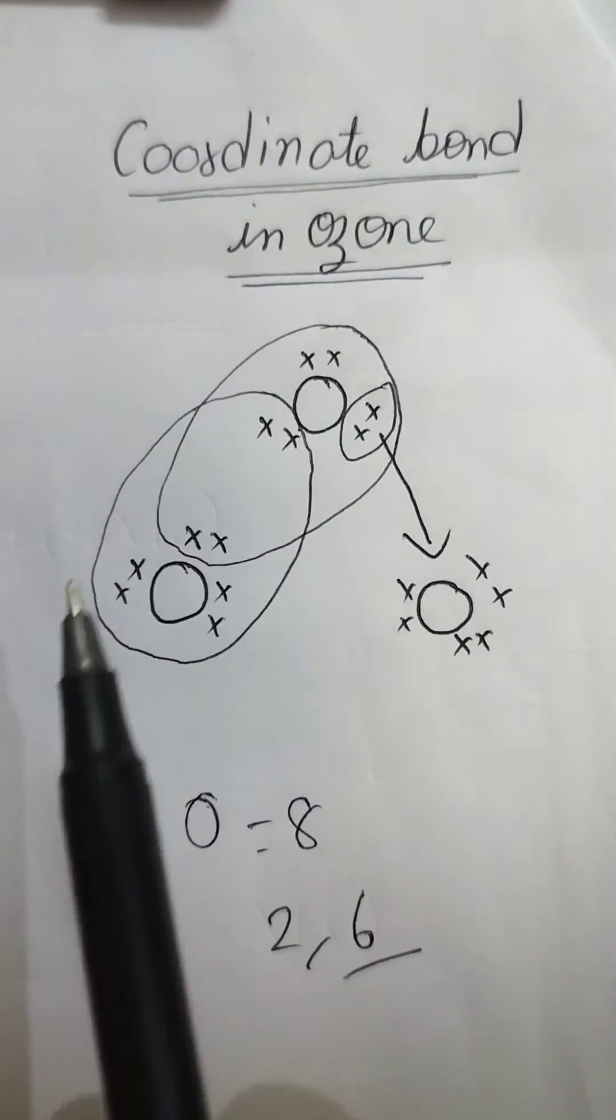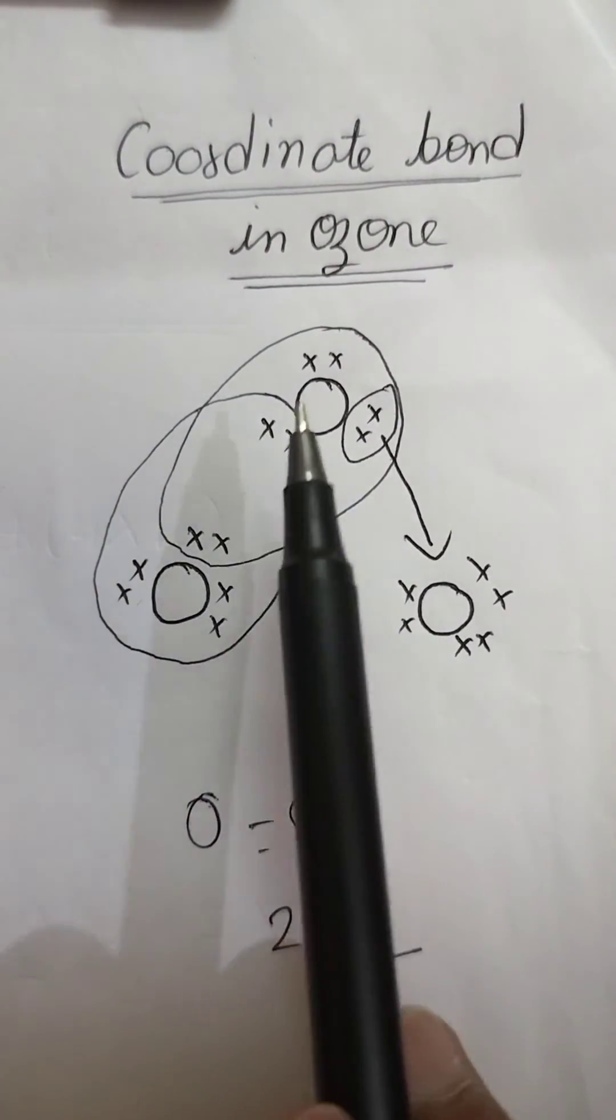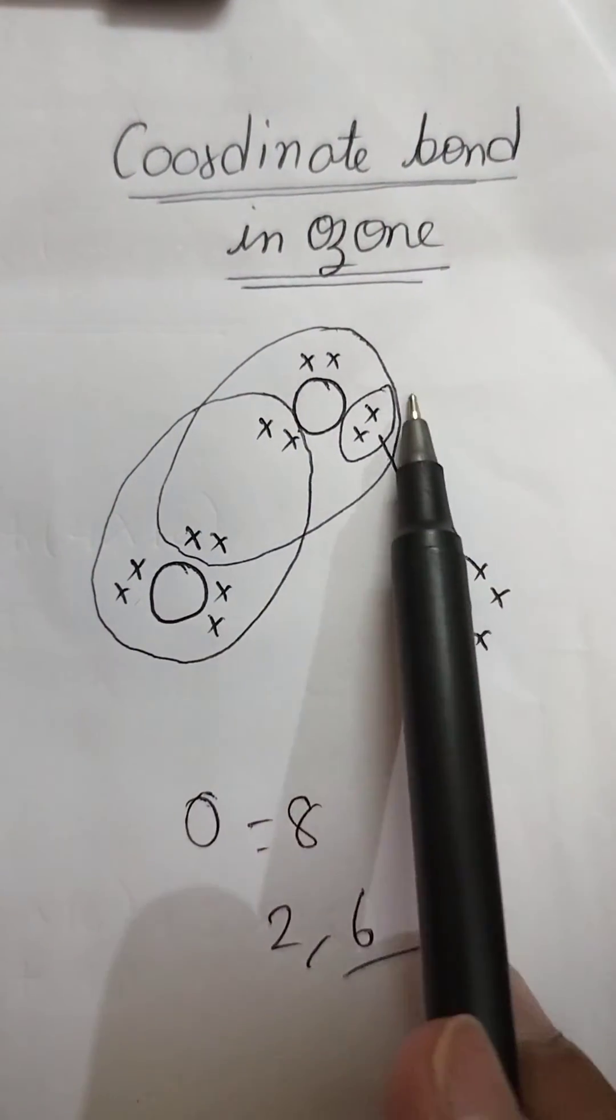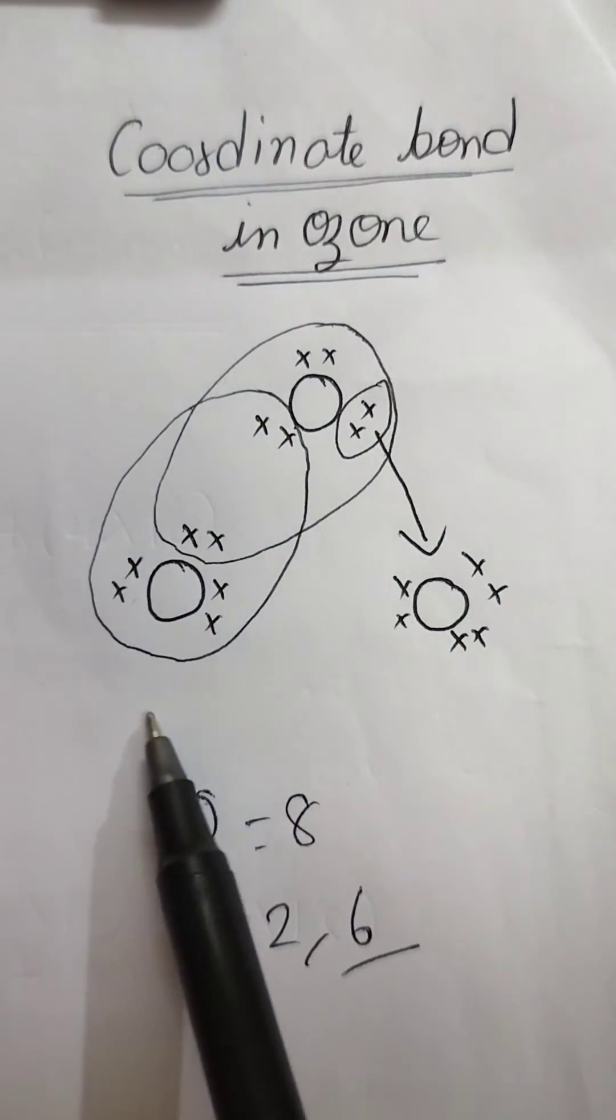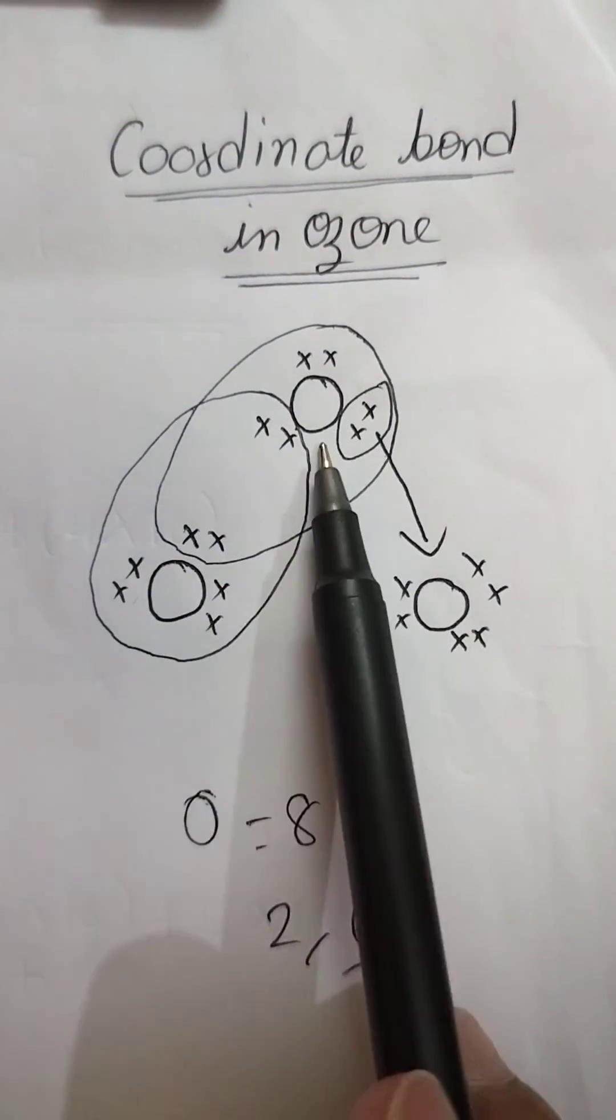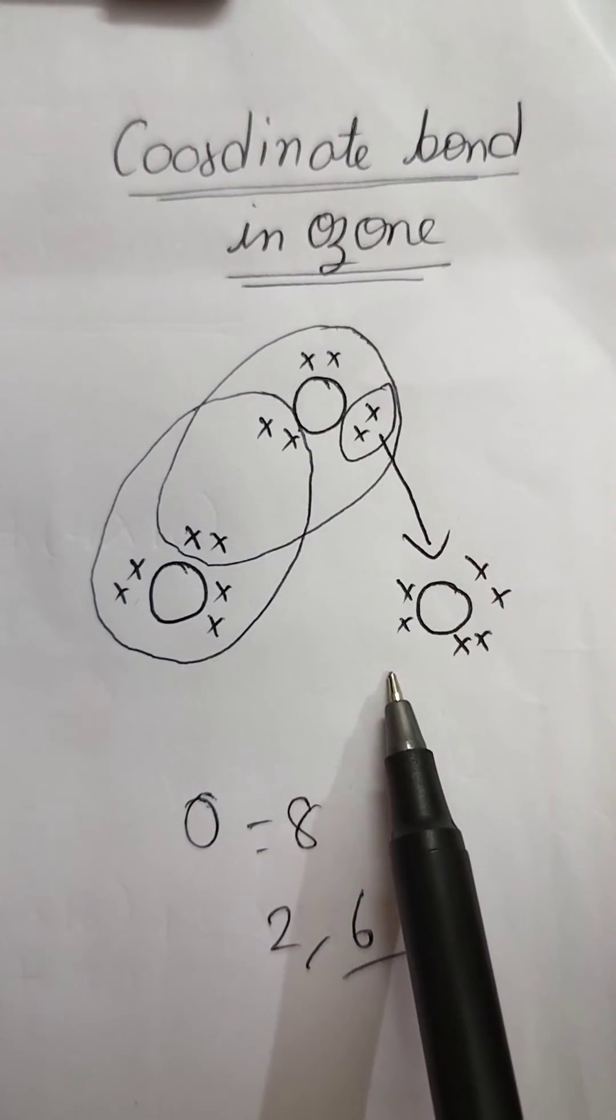Now this oxygen and this oxygen will share two electrons from each. Now this oxygen also has eight electrons in its octet and this also has eight electrons in its octet. Both are stable. But they have to combine with this also.